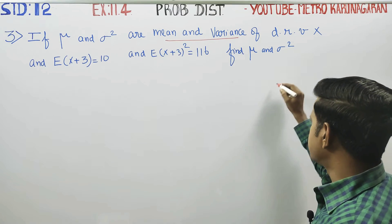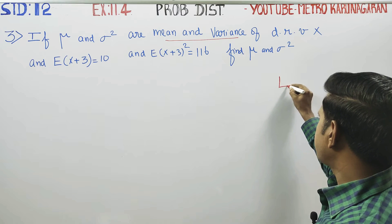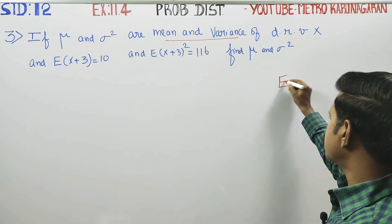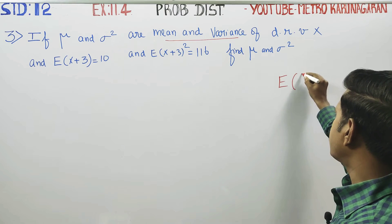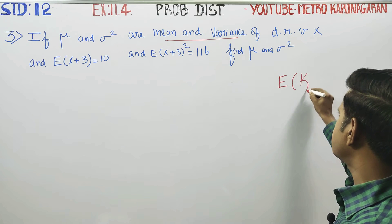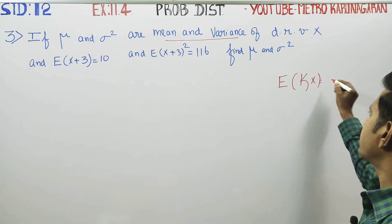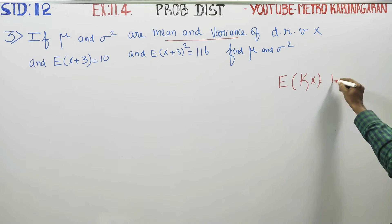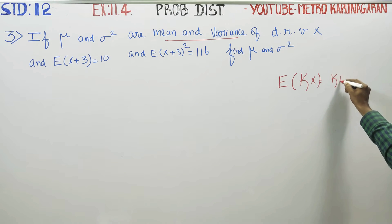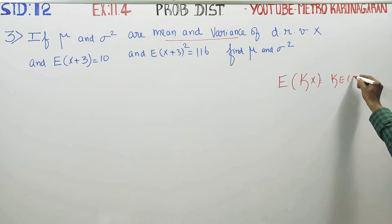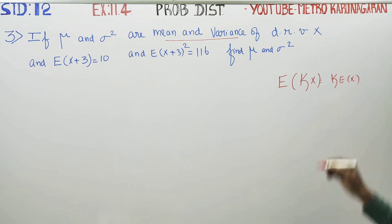Before proceeding with this sum, note the formula: the expectation of a constant times x equals the constant times the expectation of x.